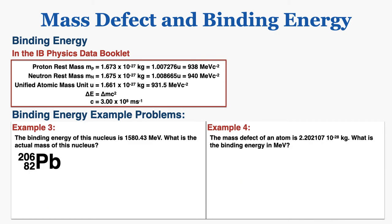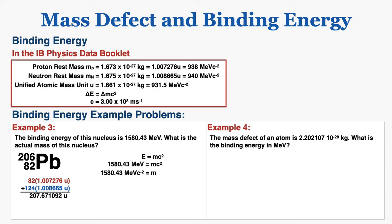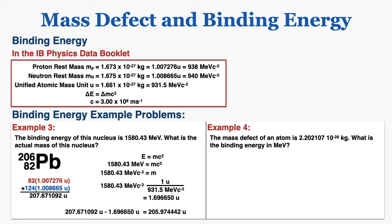Example three: the binding energy of a nucleus is 1580.43 mega electron volts — what is the actual mass of the nucleus? I start by finding the expected mass from the number of protons and neutrons. Then I use E equals mc squared and the binding energy to find the mass defect. Converting back to unified atomic mass units using a factor label, I get 1.696650u as the mass defect. Subtracting that from the expected mass gives the actual mass of the nucleus.